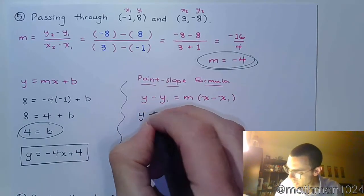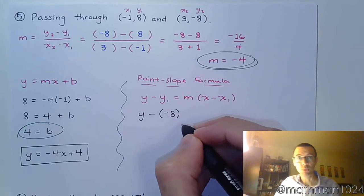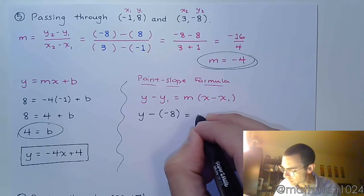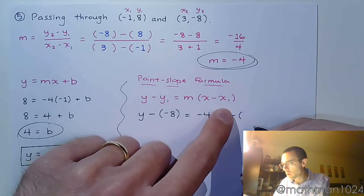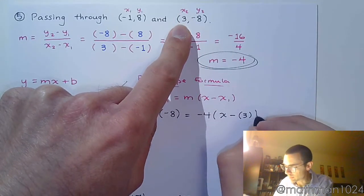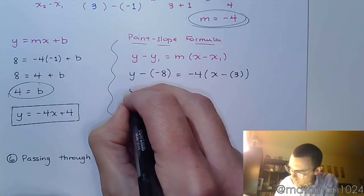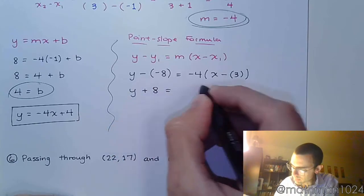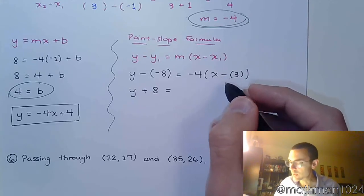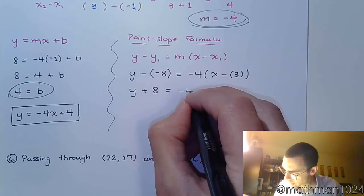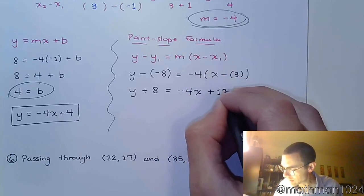So this is going to be y minus, I'm going to use this y-coordinate, so that's negative 8. Make sure you use parentheses correctly when you substitute. My slope is negative 4, and then x minus the corresponding x value here was 3. And now we're just going to clean things up a little bit. So this becomes y plus 8. Over here, that set of parentheses doesn't really do anything extra for us, so it's really just x minus 3. So we can distribute that negative 4. So it's negative 4x, negative 4 times negative 3 is positive 12.